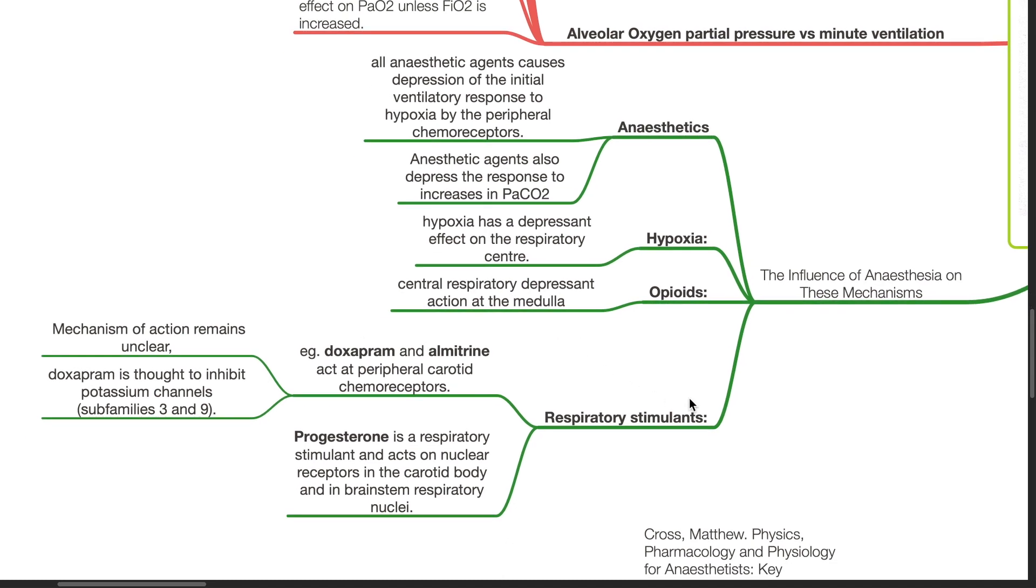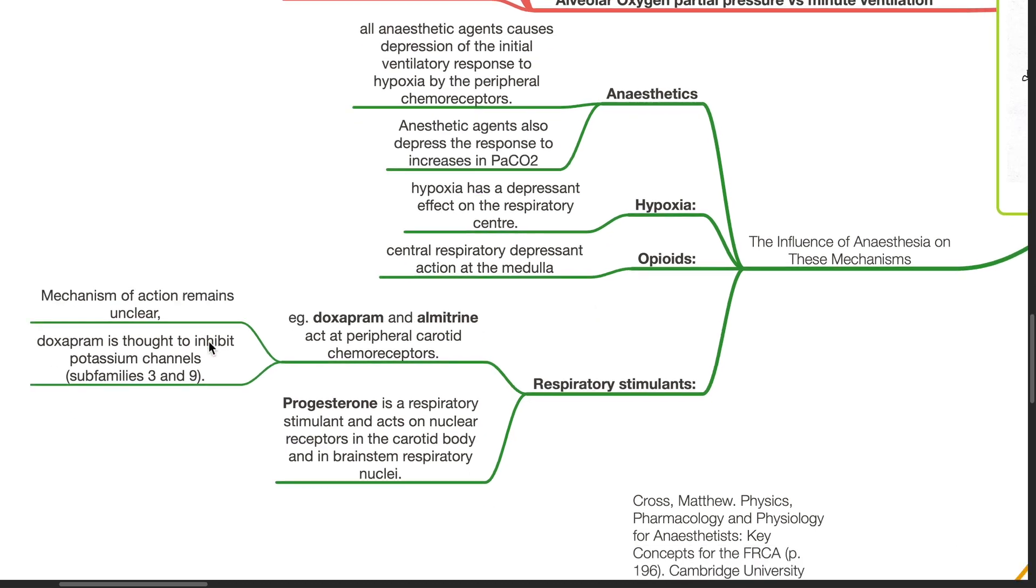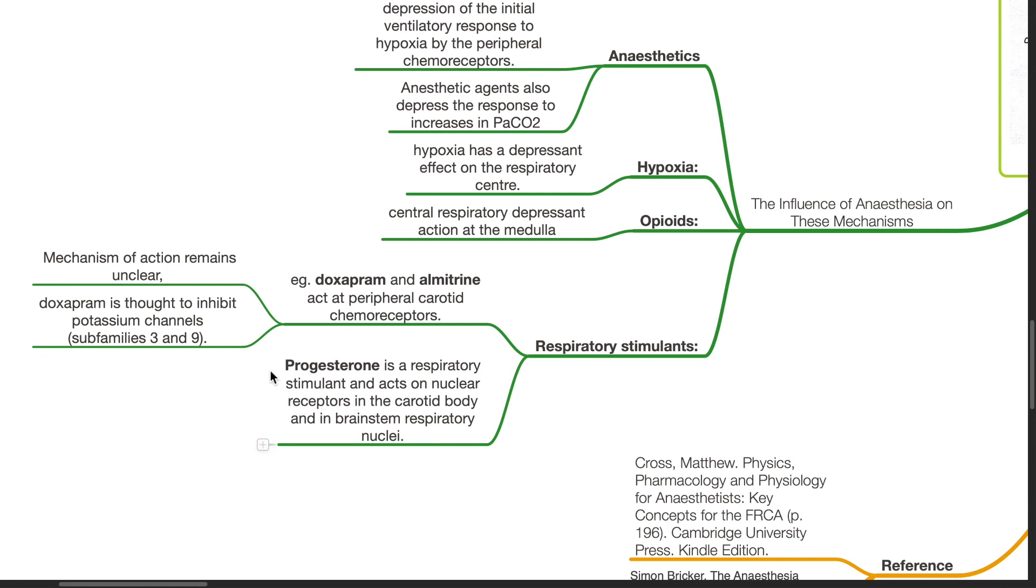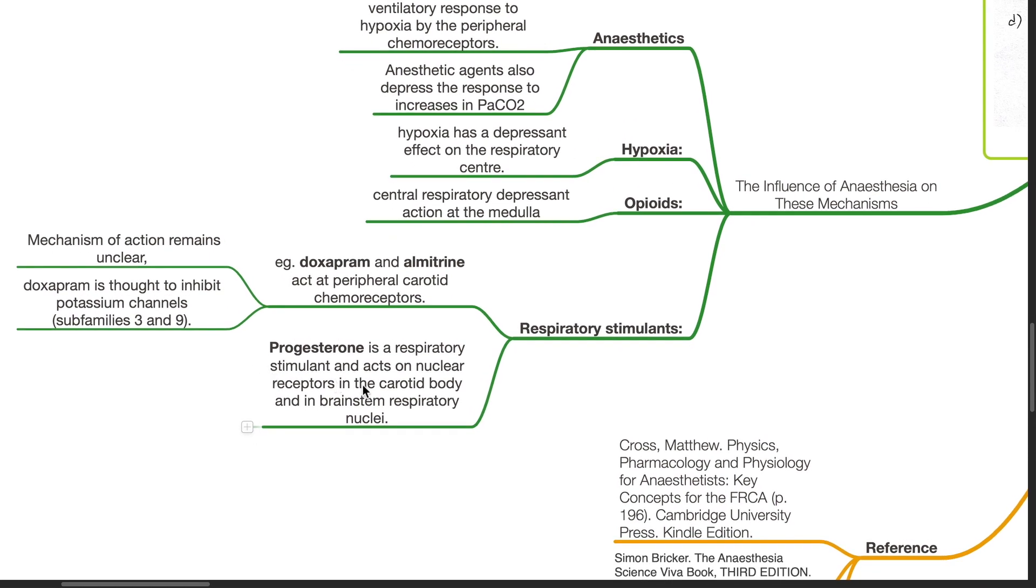Respiratory stimulants such as doxapram and almitrine act at the peripheral carotid chemoreceptors. The mechanism of action is unclear. Doxapram is thought to inhibit potassium channel subfamily 3 and 9. Progesterone is a respiratory stimulant and acts on nuclear receptors in the carotid body and in the brainstem respiratory nuclei.